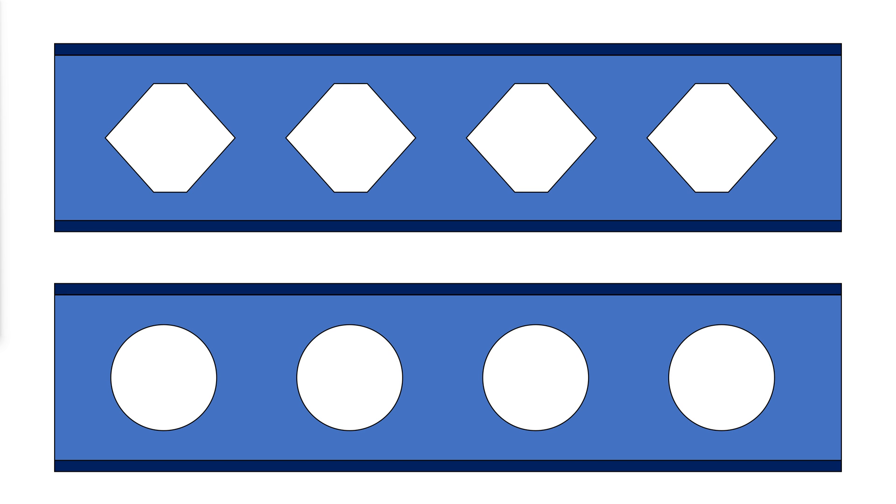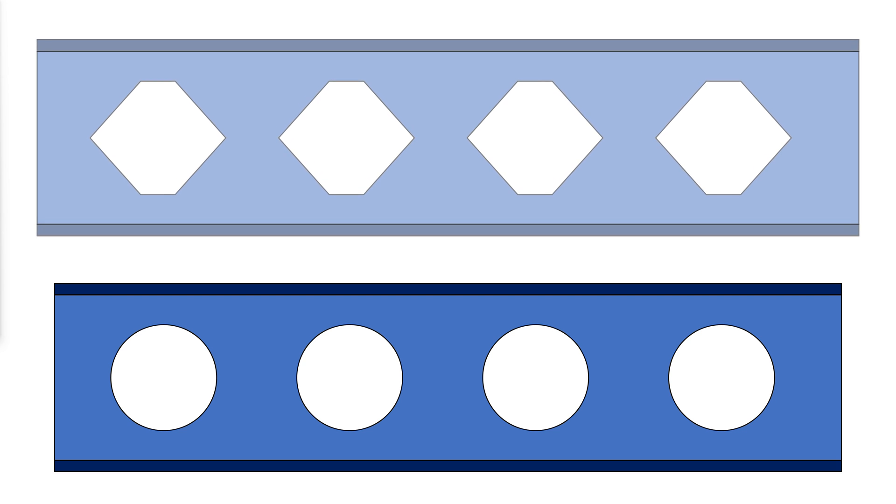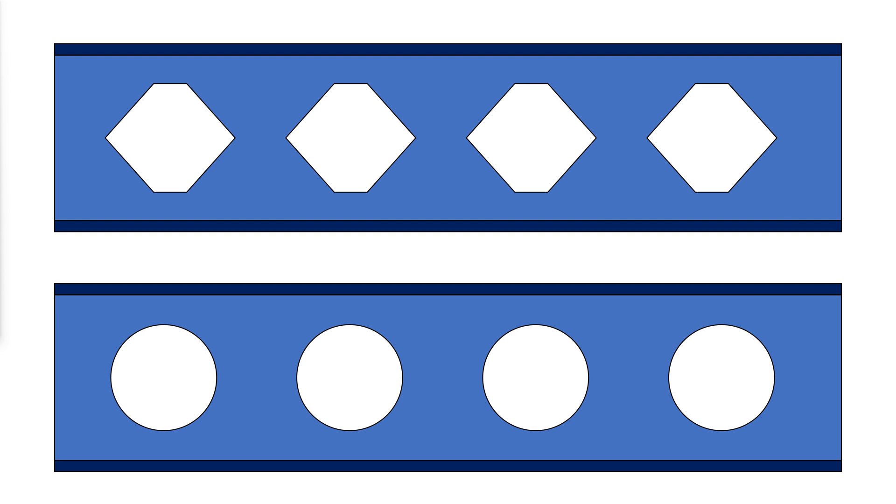Castellated and cellular beams are custom designed for a specific location on a specific project. The process by which castellated and cellular beams are fabricated is similar but not identical.